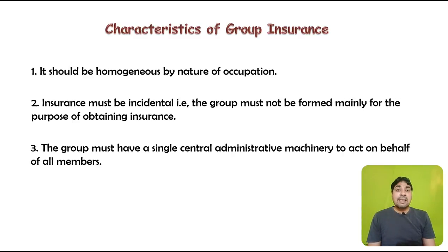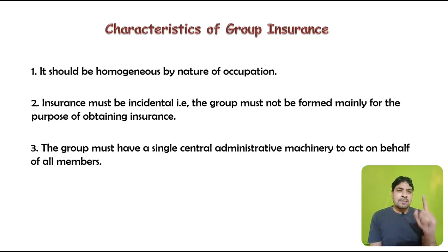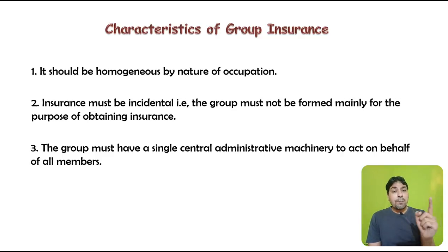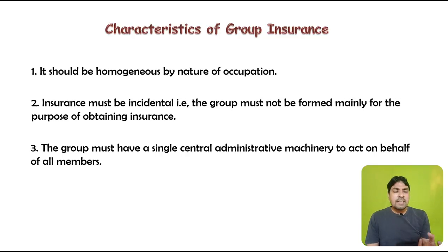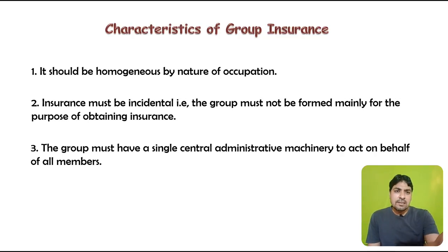The third characteristic is that the group must have a single central administrative machinery to act on behalf of all members. For example, in a law college the principal acts as the administrative machinery representing all members. Similarly, in a factory the employer represents the employees. The group must have someone to represent it in order for a group insurance policy to be taken.